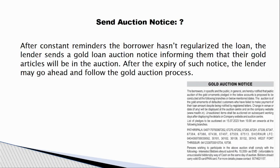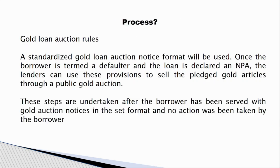After the loan expires or becomes NPA, an auction notice is sent to the borrower. The notice specifies that within 60 days the borrower must come to the branch and start the repayment process. The borrower can discuss with the bank, pay the interest and 20% of the principal, and request more time. If the borrower does not respond, the auction process is started.